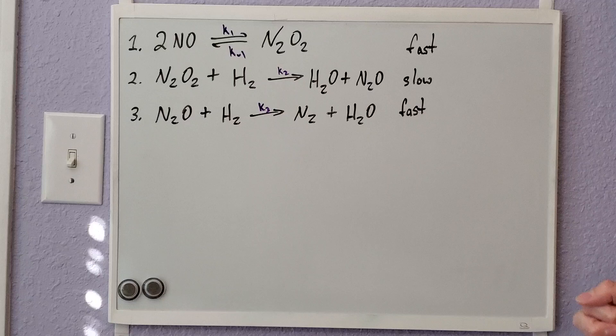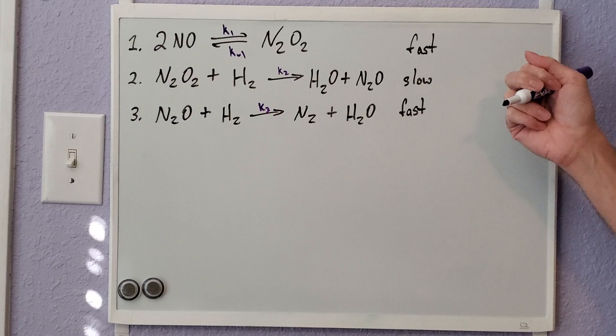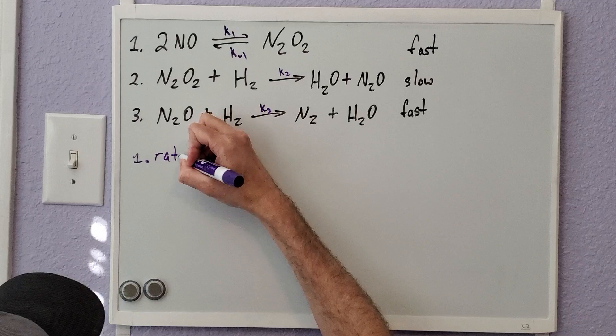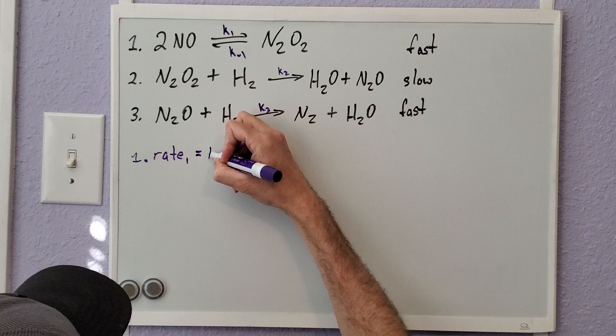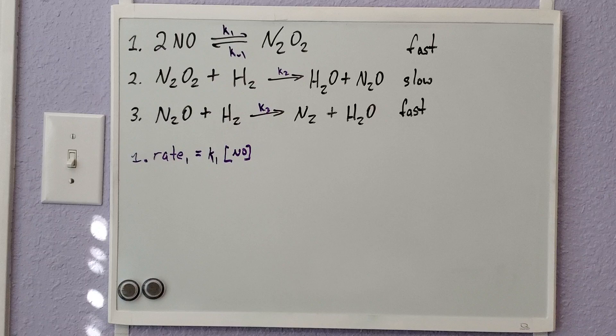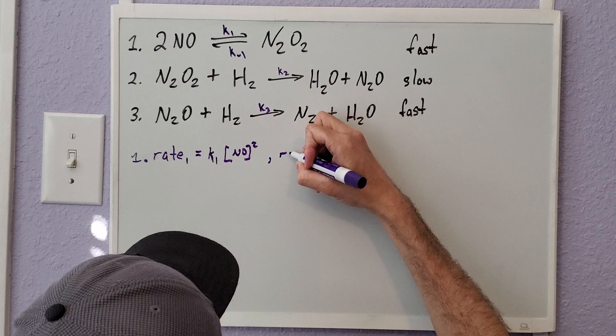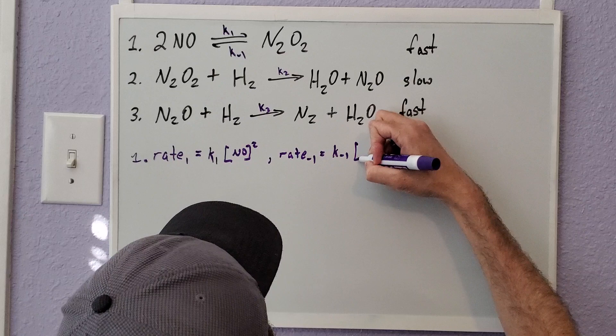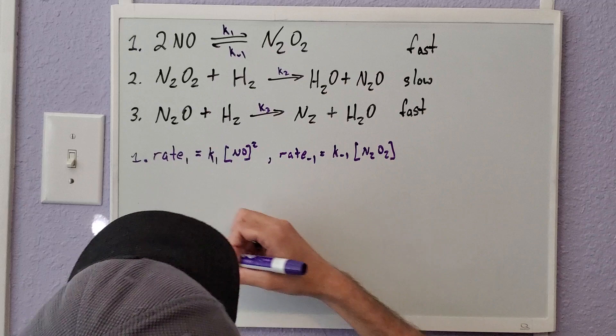We can write out the rate laws for each step the same way we've done before. For the first step, the forward rate — Rate1 — equals K1 times the concentration of NO squared, since there are two NO molecules. The reverse rate — Rate-1 — equals K-1 times the concentration of N2O2.